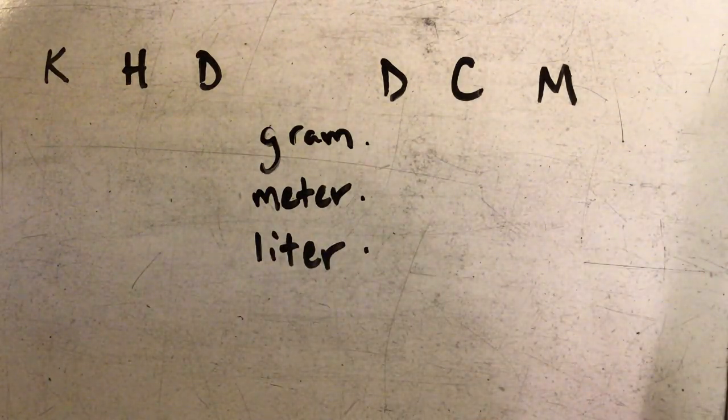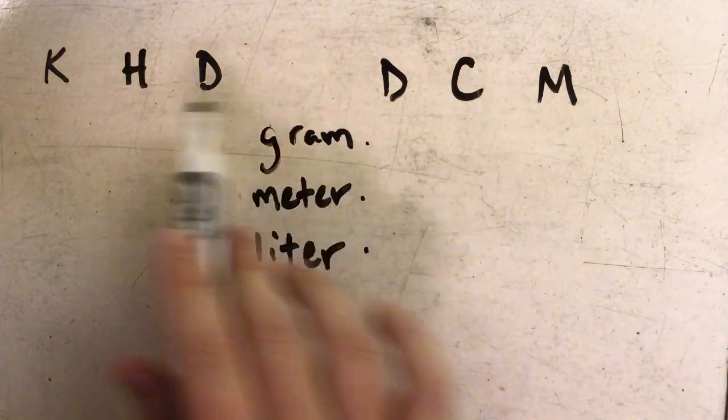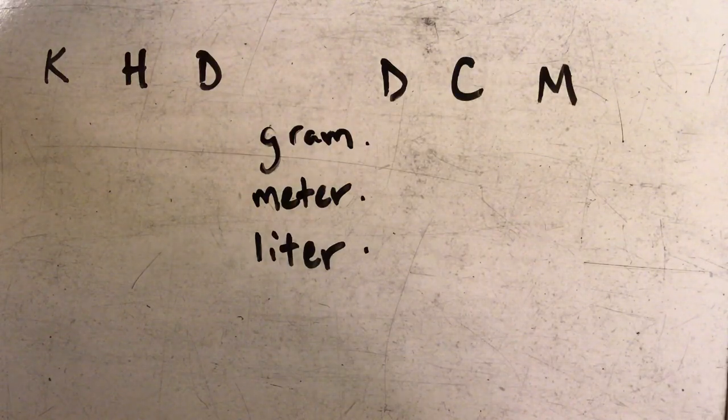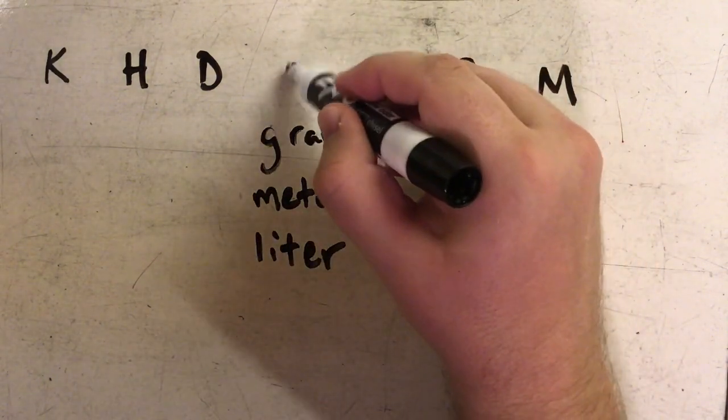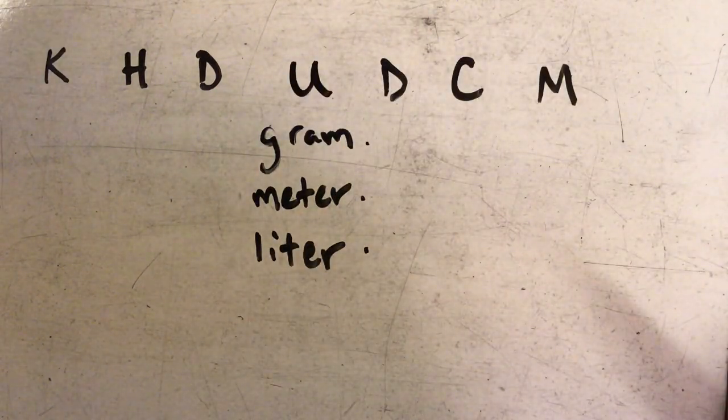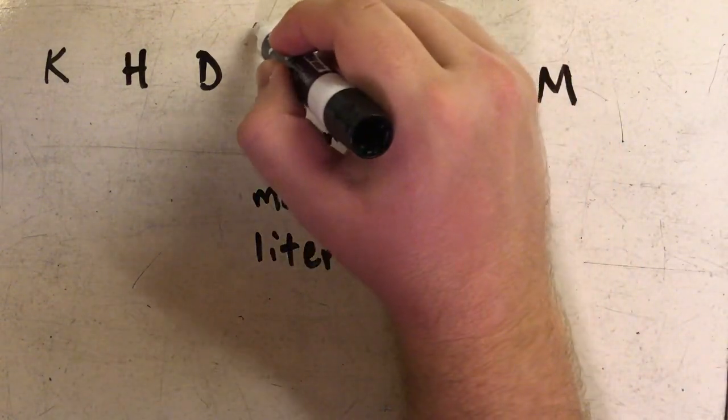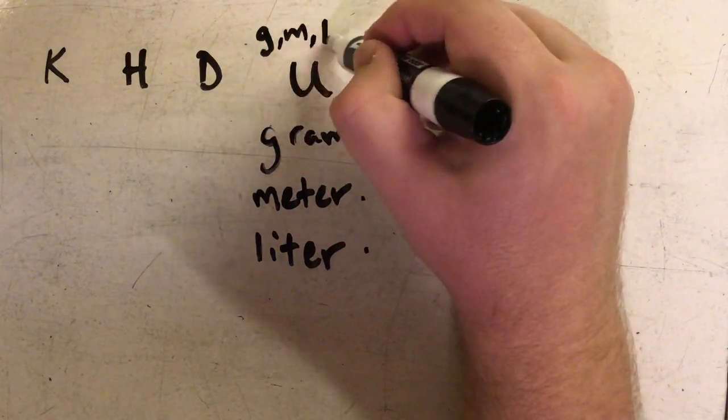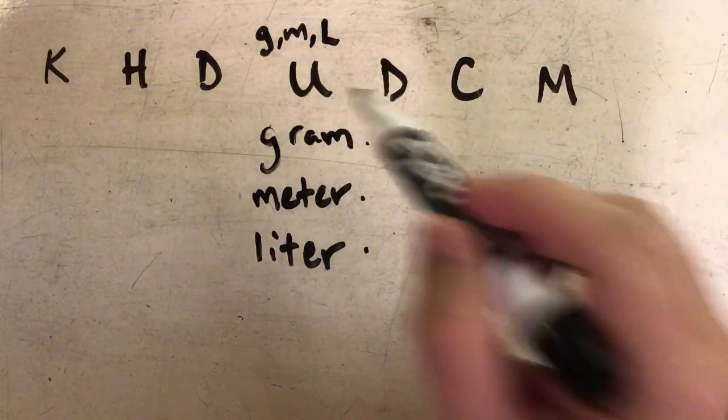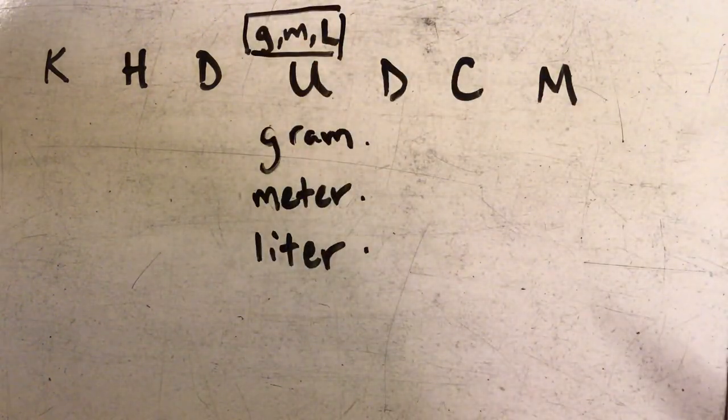We need to have what's known as kind of a map, as far as from kilo to milli, on how to move. We also need a place for our basic units, so I'm going to put a U right there and that's going to stand for our basic units. But we need to remember that the U could be G for gram, it could be M for meter, or it could be an L for liter, so all of those fall under the U space.